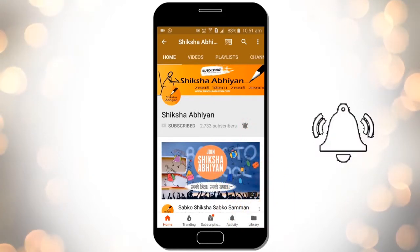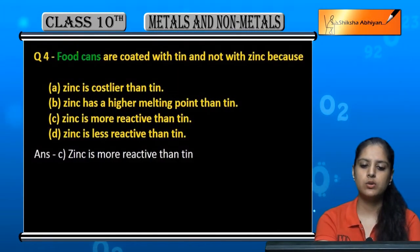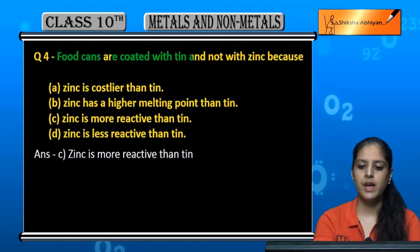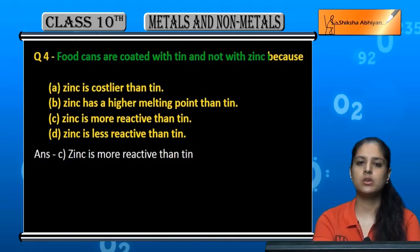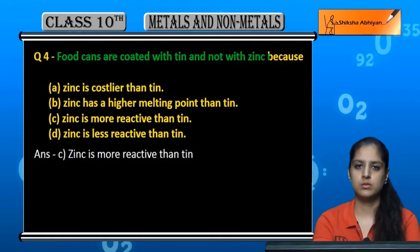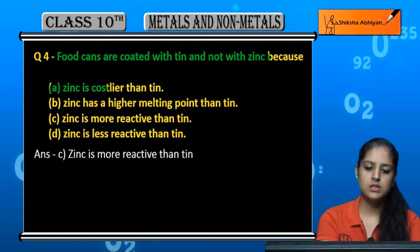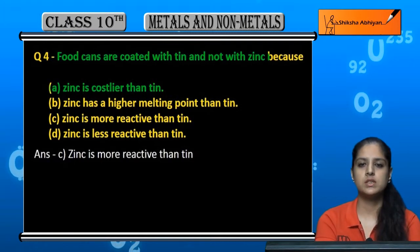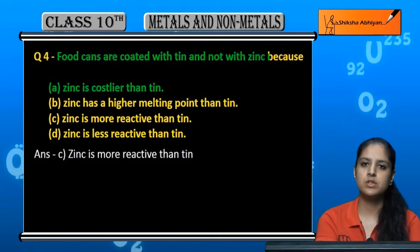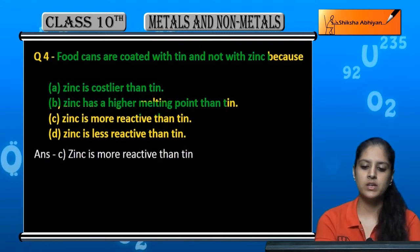Question 4: Food cans are coated with tin and not with zinc. What is the reason? Option A — zinc is costlier than tin — is incorrect. Another option is that zinc has a higher melting point than tin.